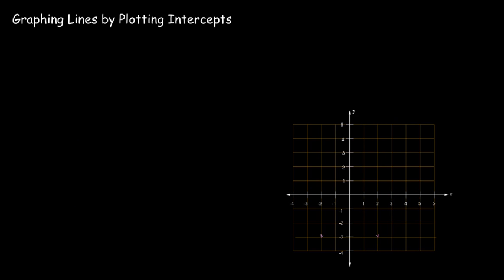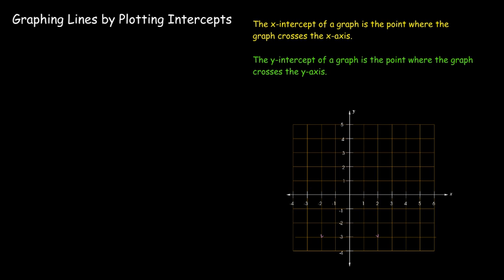Now, there are two important points for almost every line that's not horizontal or vertical. Any sloping line is going to hit both the x-axis and the y-axis. So the point where the graph crosses the x-axis has a special name, and we call it the x-intercept. And the point where the graph crosses the y-axis is called the y-intercept. On the x-axis, all the y-values are 0, all the y-coordinates. And on the y-axis, all the x-coordinates are 0. So I could potentially graph an equation of a line by just looking at the intercepts. And that should be fairly easy because we're going to be substituting 0 for one of the variables.